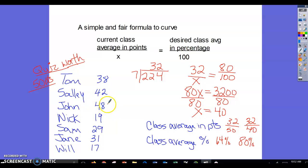For John, for instance, he's going to have 48 over 40, which is going to reward him for his hard work and effort, the same as it's going to help all the other students in the class.